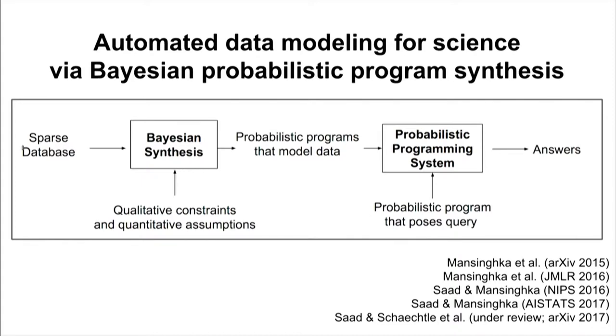So how does that work? We start with a sparse database and together with some qualitative constraints and quantitative assumptions, we feed the data into our synthesizer. The synthesizer spits out probabilistic programs, ensembles of probabilistic programs that model the data generative process.